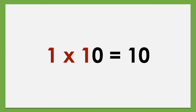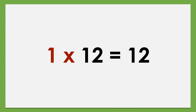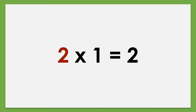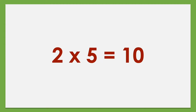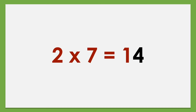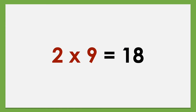1 times 10 equals 10, 1 times 11 equals 11, 1 times 12 equals 12. Set of 2: 2 times 1 equals 2, 2 times 2 equals 4, 2 times 3 equals 6, 2 times 4 equals 8, 2 times 5 equals 10, 2 times 6 equals 12, 2 times 7 equals 14, 2 times 8 equals 16.